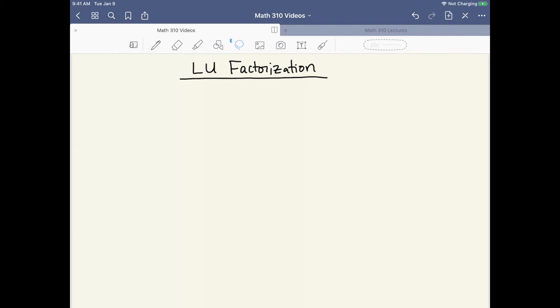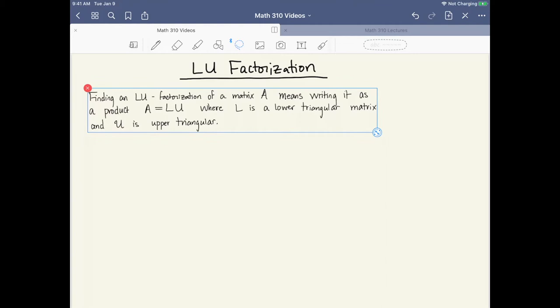In this video I'm going to demonstrate how to find an LU factorization of a matrix. First, what's an LU factorization? That means we're going to be writing a matrix A as a product of two matrices, L and U, where L is a lower triangular matrix and U is an upper triangular matrix.